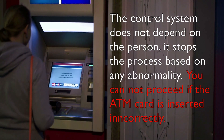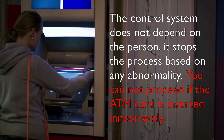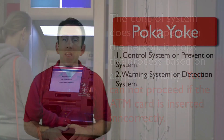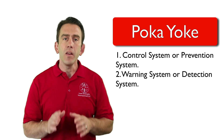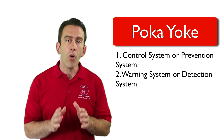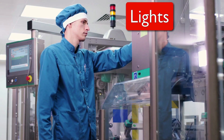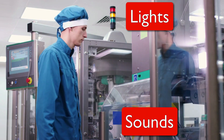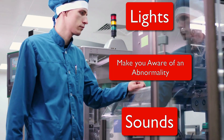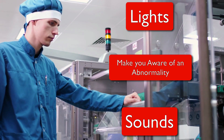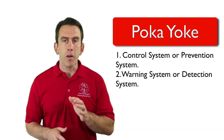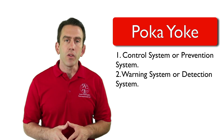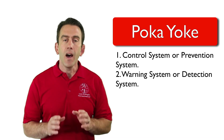This is because the control system does not depend on a person — it stops the process based on any abnormality. If you cannot use a control method, you should use a warning system. There are many different types of systems for both control and warning. Some use lights, others have sounds, and many use other forms of sensory notification. Both types will make people aware of an abnormality, but only one type will stop or control the process automatically. The key difference between the two is that one is automated and the other is not.